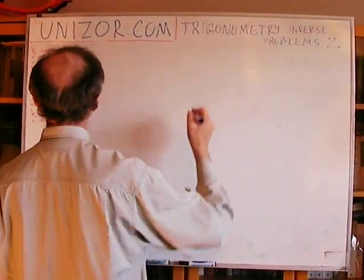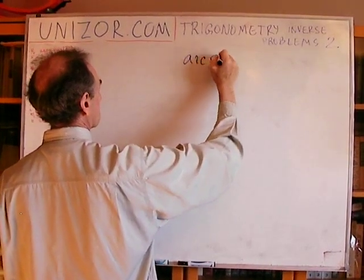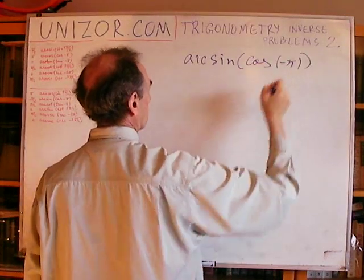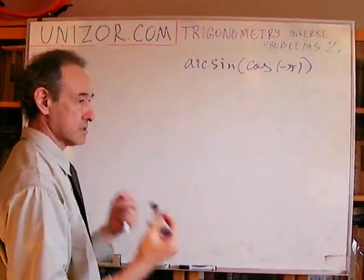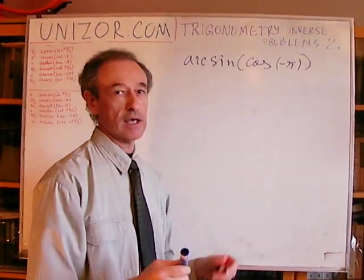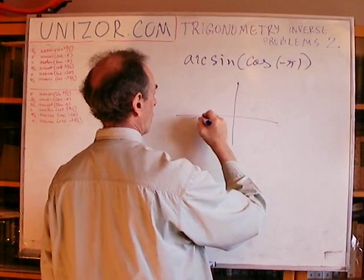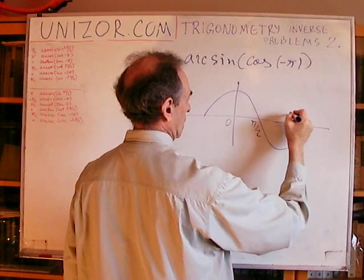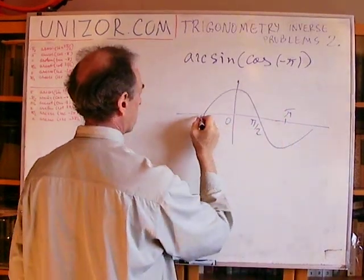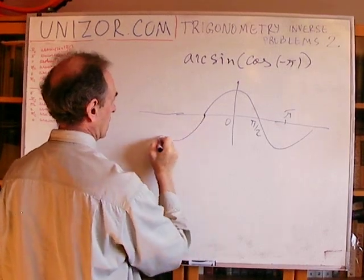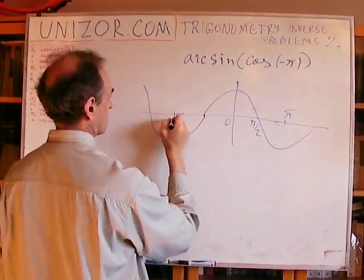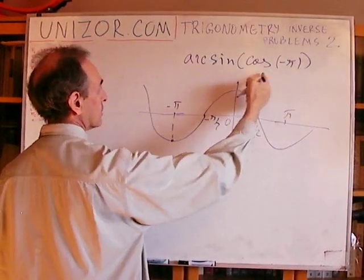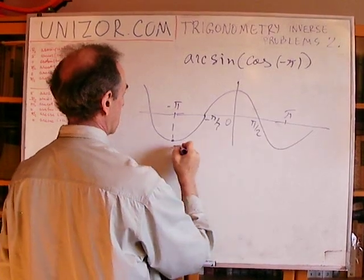Next: arc sine of cosine of minus π. Again, it's two steps. First, evaluate cosine of minus π. Looking at the cosine graph, we can see 0, π/2, π, and extending to minus π, minus π/2. The value of the cosine of minus π is minus 1.